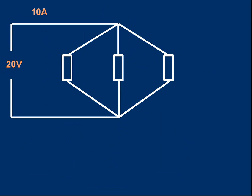To help us with the mathematics, let's invent a circuit: three resistors in parallel. We're going to apply 20 volts, and let's suppose that causes a current of 10 amps to go through the top wire. Because they're in parallel, the 10 amps will split three ways, and at the bottom the three separate currents combine and return to the supply. If the resistors are equal, the currents would be equal — for example, 3.3 recurring amps in each resistor.